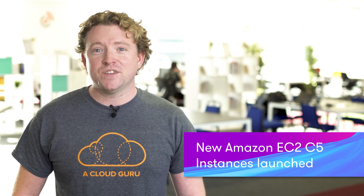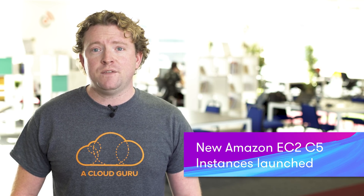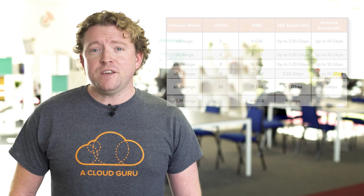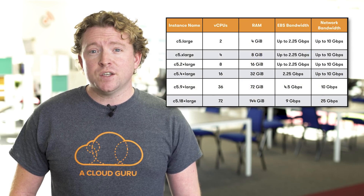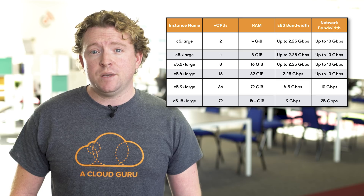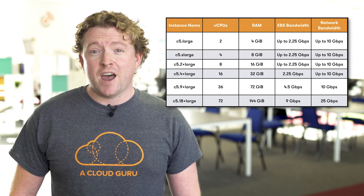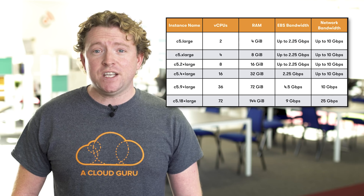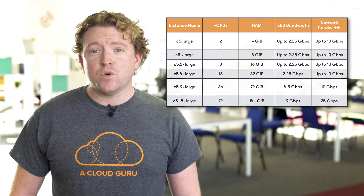There's been a ton of announcements this week. One of the biggest was the new C5 instance launch for EC2. The C instance family first launched in 2010 and we've come a long way in seven years. The C5 offers a 25% price and performance improvement over the C4 instances, with up to 50% for some workloads. The C5 comes in a variety of sizes from a C5 large with 2 vCPUs and 4 gigs of RAM all the way up to a C5 18xlarge with 72 vCPUs and 144 gigs of RAM.